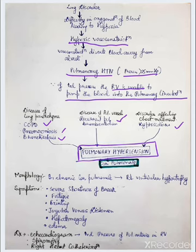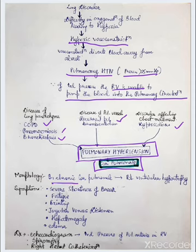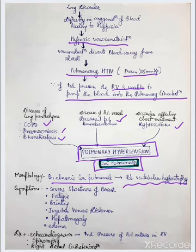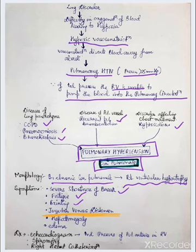The morphology of cor pulmonale: in chronic cor pulmonale, right ventricle hypertrophy occurs. Symptoms of pulmonary hypertension and cor pulmonale include severe shortness of breath, fatigue, fainting, jugular venous distension — very important — hepatomegaly, and edema.